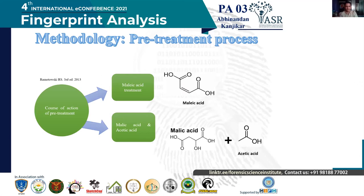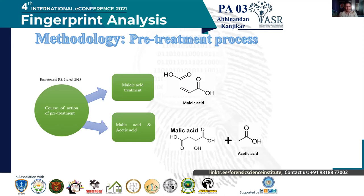Before proceeding to the main method, it is necessary to carry out pretreatment. Even though the physical developer method works well on finished papers, these papers contain alkaline fillers and binders that alter the composition and function of the ingredients. So it is necessary to neutralize these alkaline fillers and binders. The sample paper is immersed in a 2.5 percent malic acid solution for 5 to 10 seconds until the bubbles cease to evolve. The prime criteria for the acid used is that it must be non-chlorinated, because chlorinated acids leave chlorine residue behind which reacts with silver, leaving a dark background that can interfere with the black ridges formed, preventing distinguishing of the fingerprint.